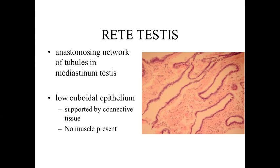The rete testis is the next region along this passageway. The straight tubules dump into this anastomosing network within the mediastinum region of the testis. We have all of these tubes coming together and essentially funneling the spermatozoa into a fewer number of lumens. The rete testis is lined by a low cuboidal epithelium, still with a lot of connective tissue within the wall, no smooth muscle present, and it is characterized and differentiated from the straight tubules by this anastomosing network.